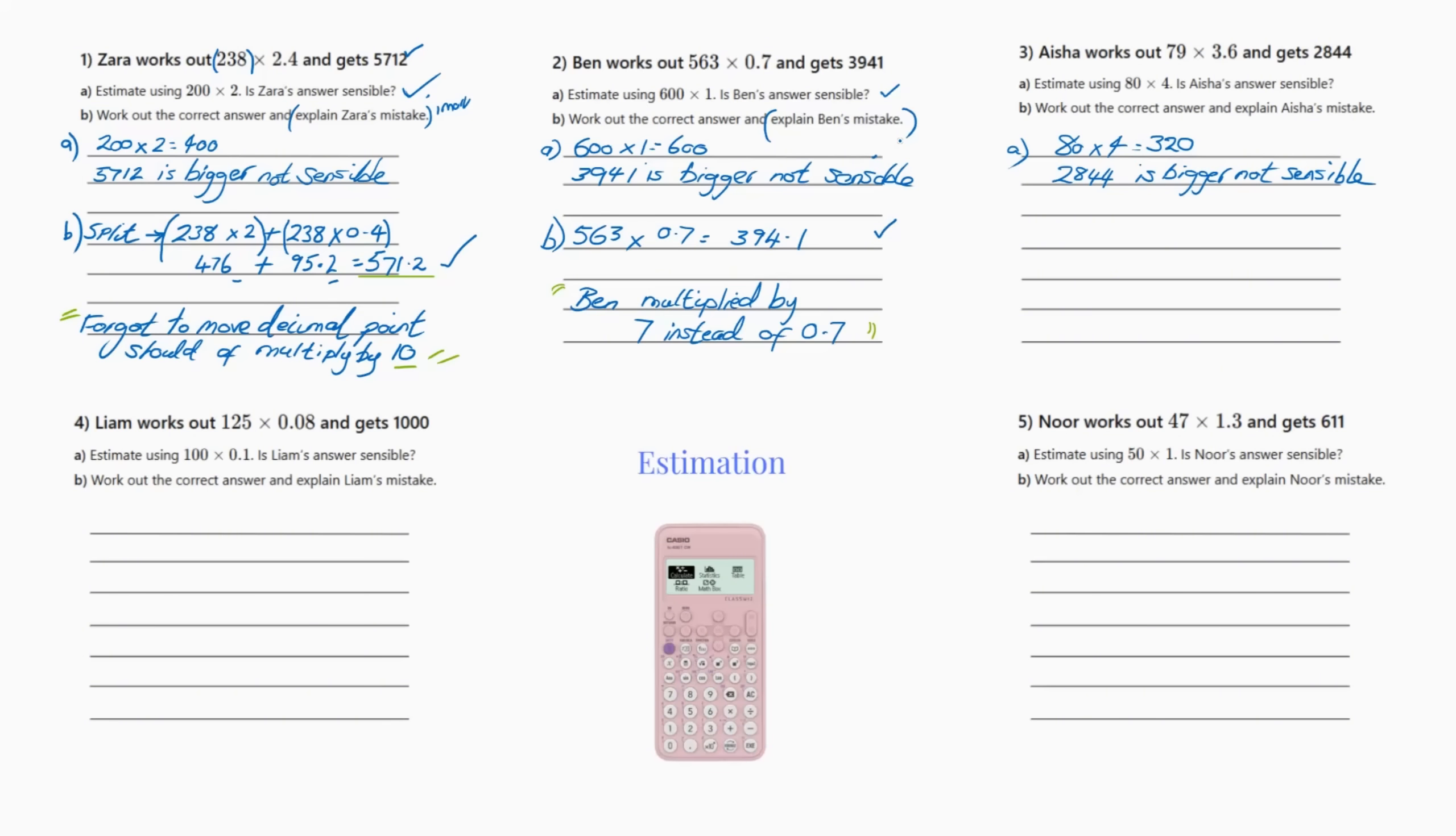But now we've got to explain Ben's mistake, and Ben multiplied the answer by 7 instead of 0.7, because if he multiplied it by 7 he would have got 3941 when the actual answer is 394.1. Now you could do long method multiplication or you could use your calculator. I'm very lazy and I use my calculator.